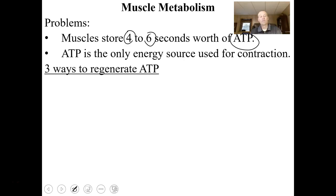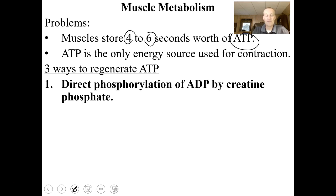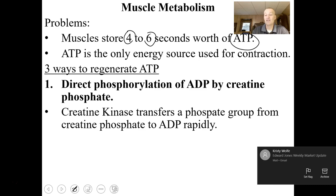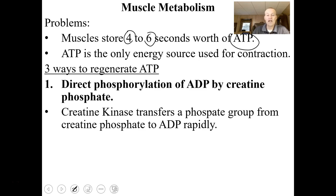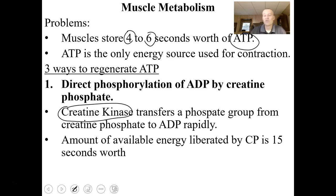ATP is the only energy source used for contraction, and there are three ways to regenerate ATP. Think of ATP as a rechargeable battery. The first way is direct phosphorylation — the transfer of a phosphate group from creatine phosphate to ADP, recharging ADP into ATP. Creatine kinase is the enzyme that does this very rapidly. The amount of available energy from creatine phosphate is about 15 seconds worth, allowing a little more usage from your muscle cell.